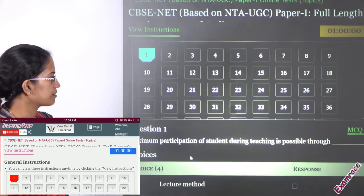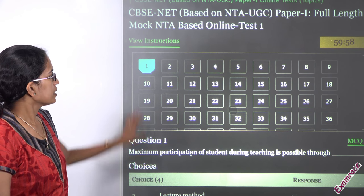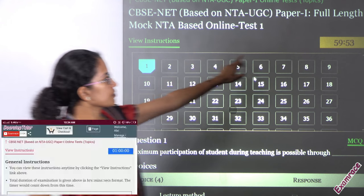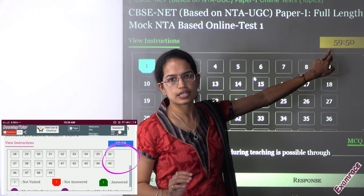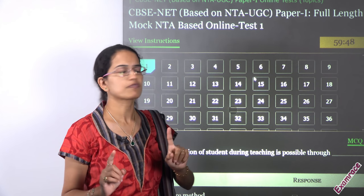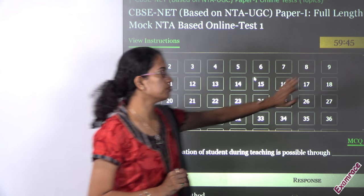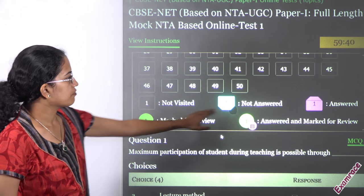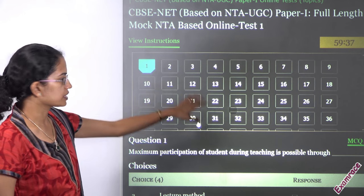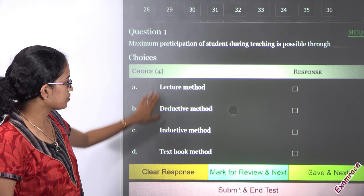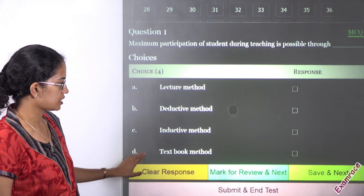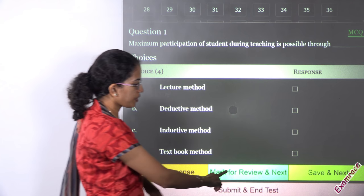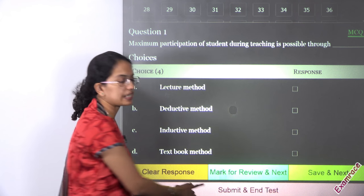As soon as you click, your first question will come up. You have all the question numbers displayed. There is a timer showing real time — for example, one hour for 50 questions — and it will decrease as you move forward. You have the first question and the choices, along with the marks allocated, and all 50 questions. As you go through questions, you will have four tabs: Clear Response, Mark for Review and Next, Save and Next, and Submit and End Test.